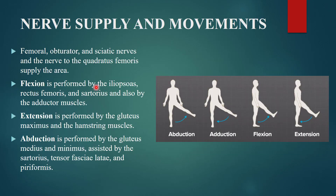The nerve supply of the hip joint comes from the femoral nerve — nerve of the anterior compartment of thigh — the obturator nerve — nerve of the medial compartment — the sciatic nerve — nerve of the posterior compartment — and the nerve to the quadratus femoris, which is present posteriorly.